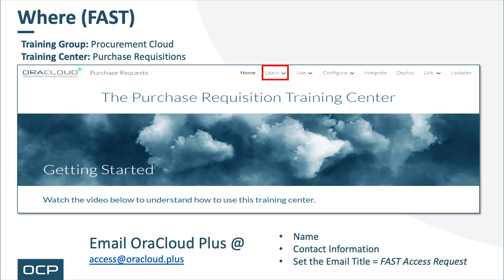Within FAST, go to the Procurement Cloud Training Group, the Purchase Requisition Training Center, under the Learn menu option. You can request access by emailing us at access@oracloud.plus. Please put your name and contact information in the body of the email and set the title to 'FAST access request.'